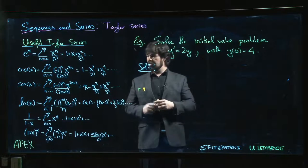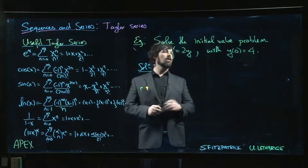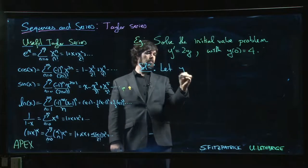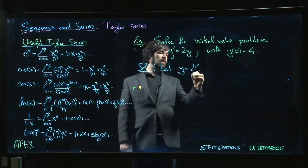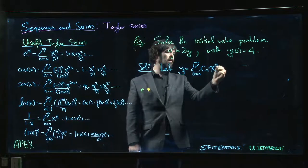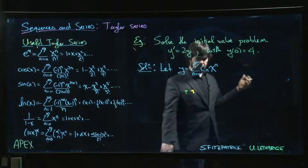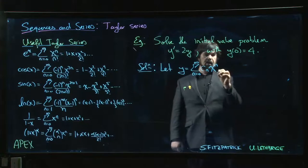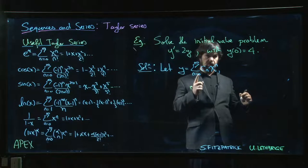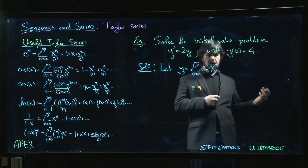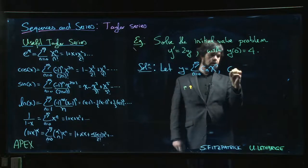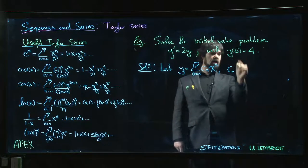So how do we proceed? We suppose that we can represent our solution y as a power series. I don't know what it is, but we suppose we have a power series representation. There's one thing I can say right away: I have c_0 plus c_1 times x plus c_2 x squared, c_3 x cubed, and so on. If I put x equal to 0, the only thing that survives is that constant term c_0, so c_0 is the initial condition.